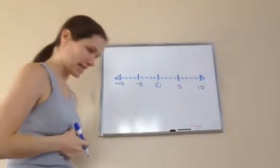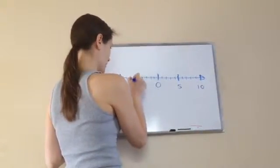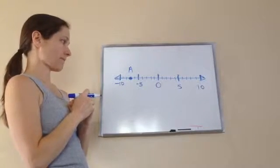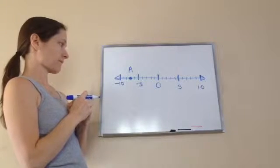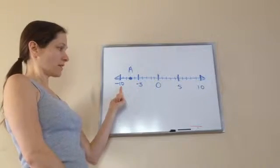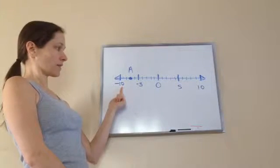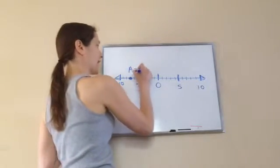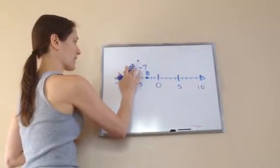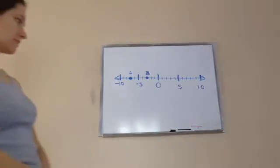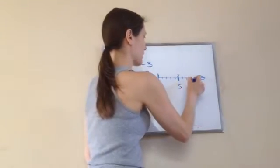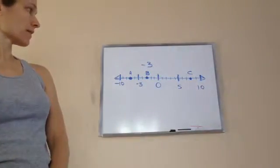Those are all of our ticks and I want you to find point A. Point A is located on negative seven. A equals negative seven. Let's try B. What is B? B would be negative three. Very good. What would C be? C would be positive eight. Excellent job.